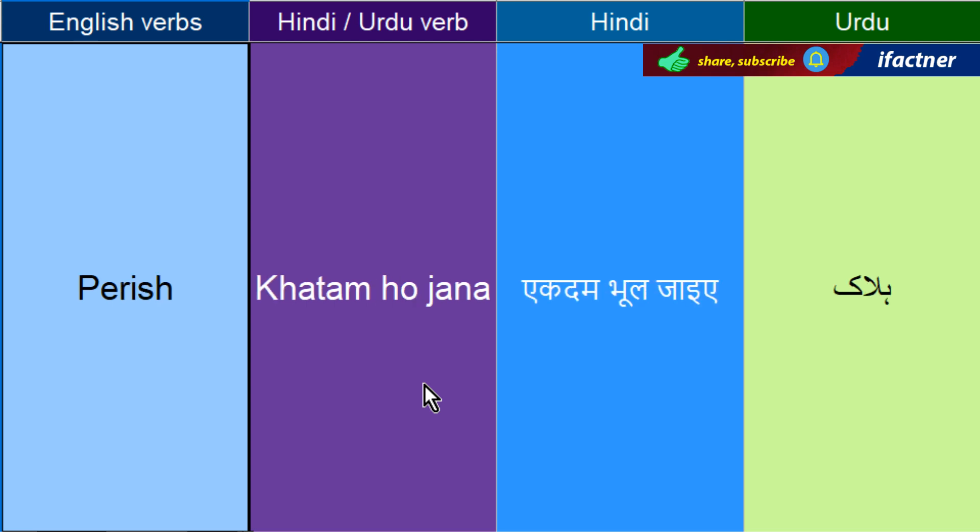Khatam ho jaane ko kehthay hain — Perish. Koi cheez halaak ho gai, bilkul hi khatam ho gai. Jis na koi ek nation thi puraane zamaane mein, aur humne kaha yaar woh perish ho gai selaab ki wajah se, to us waqt perish ka word use kerayenge.